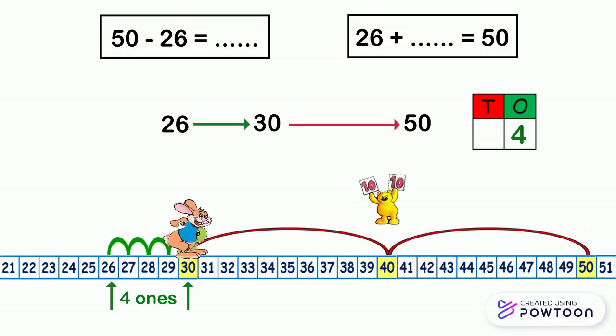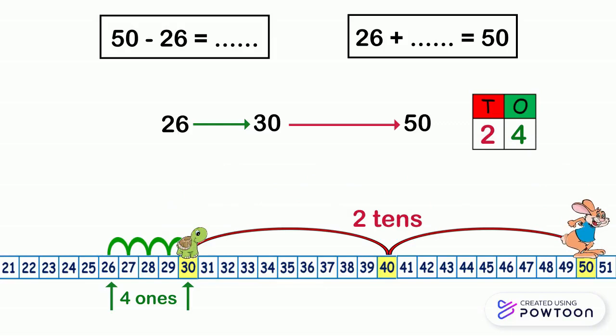For that, the rabbit jumps ten by ten, not as the turtle. The rabbit jumped two tens. So we write 2 in the tens place column. So the number obtained is 24. 50 minus 26 equals 24, or 26 plus 24 equals 50.